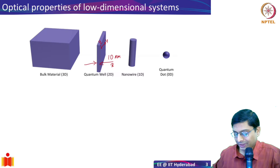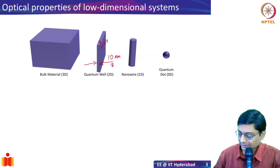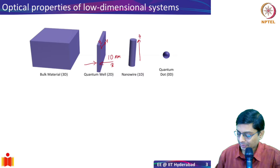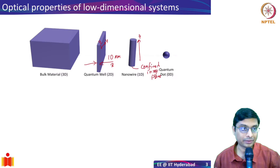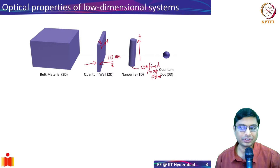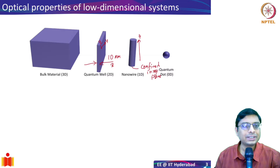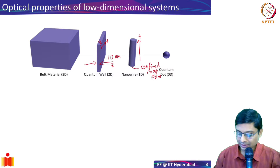Similarly, I can think about two-dimensional confinement: I let electrons move freely along the z-axis but confine them in the x-y plane — that gives me a nanowire. And then I can go further and confine an electron in all three dimensions, which gives me a quantum dot as shown in the picture. So: a bulk structure is 3D, a quantum well is one-dimensional confinement, a nanowire is two-dimensional confinement, and a quantum dot is three-dimensional confinement.